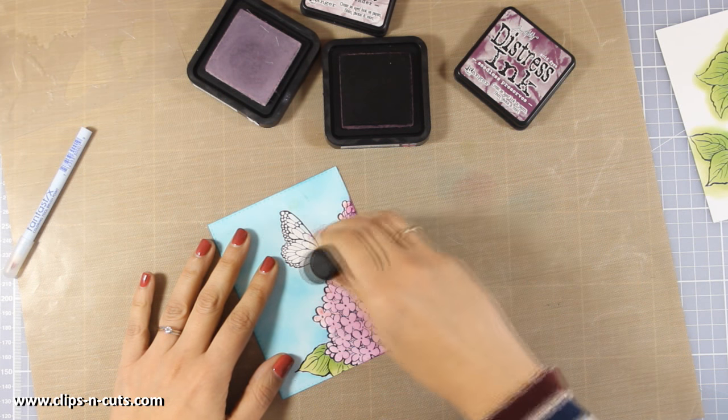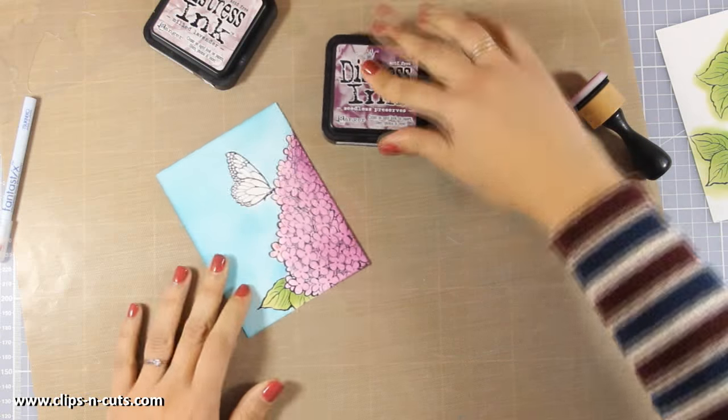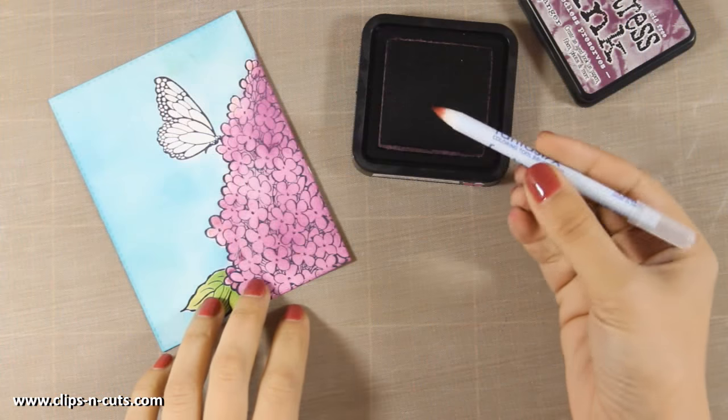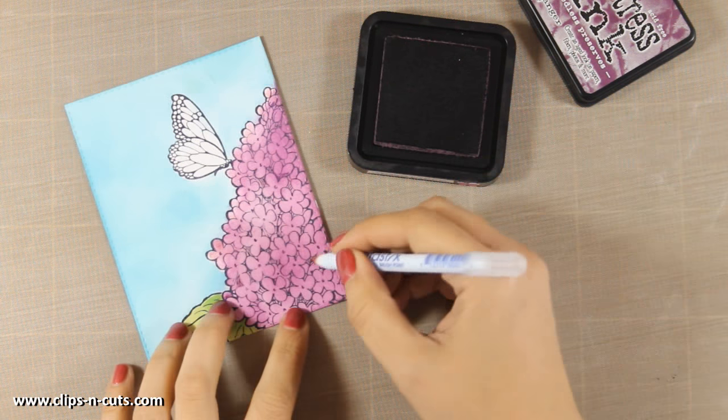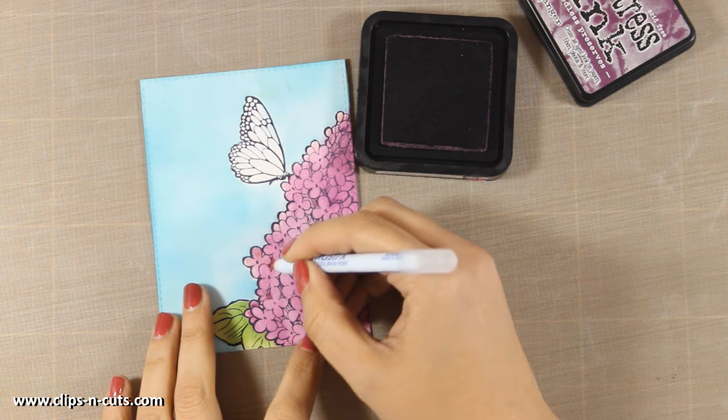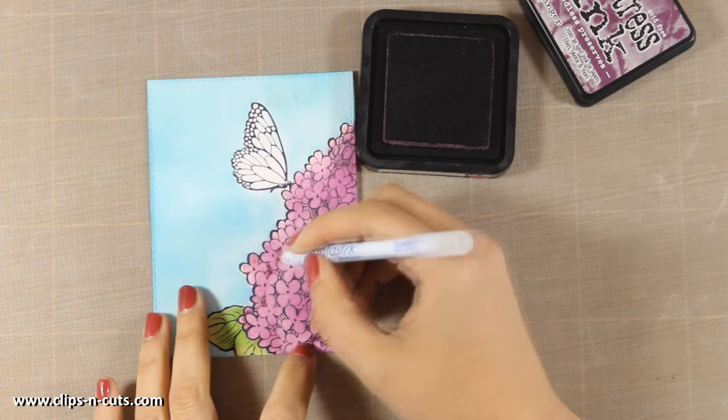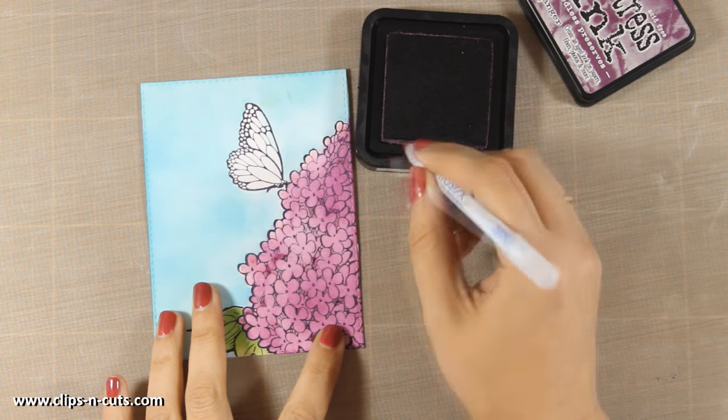Now the trick to make your lilac look more realistic is to have at least a couple of shades of that color on your flowers because otherwise it's going to look totally flat. Now you can add some shadows on some of the flowers that are at the back and you can do that either with your finger dabbers as I am showing you here or you can use a paint brush.